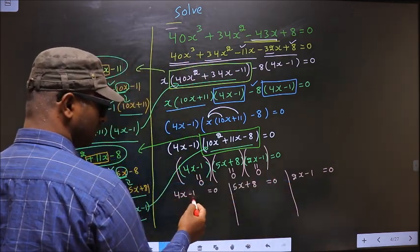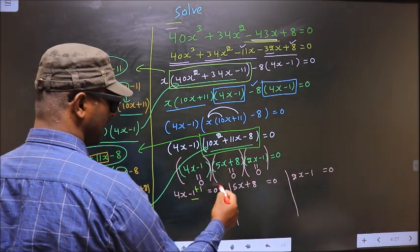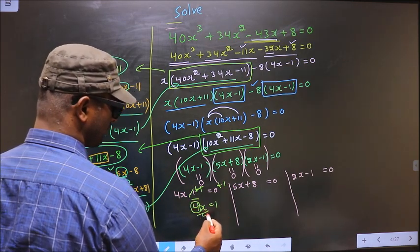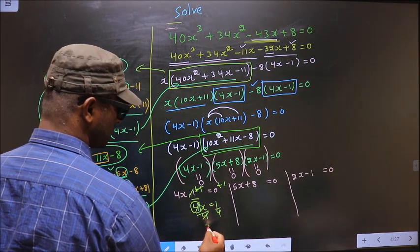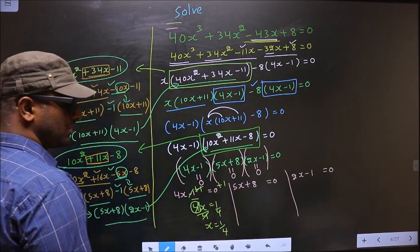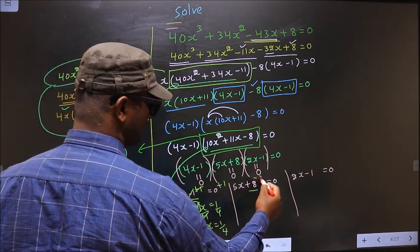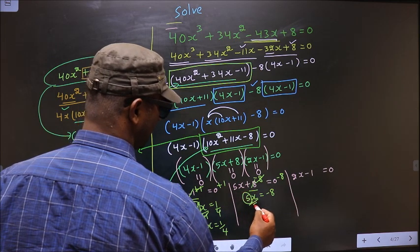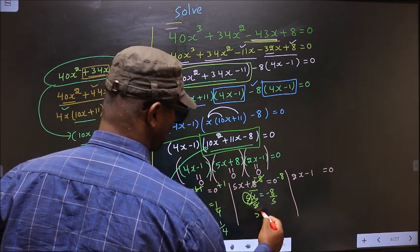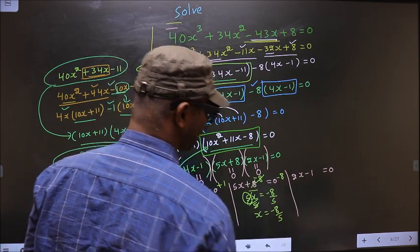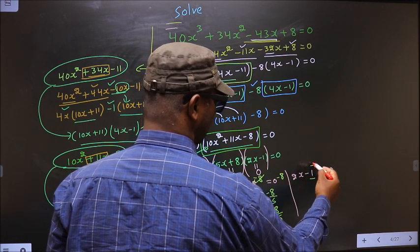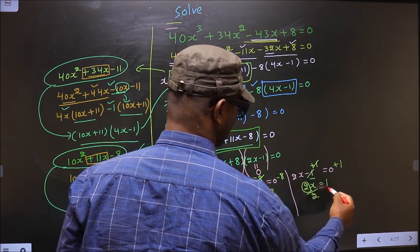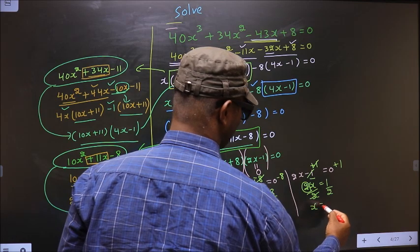To get x from 4x minus 1 equal to 0, add 1 to get 4x equal to 1, then divide by 4: x equal to 1 by 4. For 5x plus 8 equal to 0, subtract 8 to get 5x equal to minus 8, then divide by 5: x equal to minus 8 by 5. For 2x minus 1 equal to 0, add 1 to get 2x equal to 1, then divide by 2: x equal to 1 by 2.